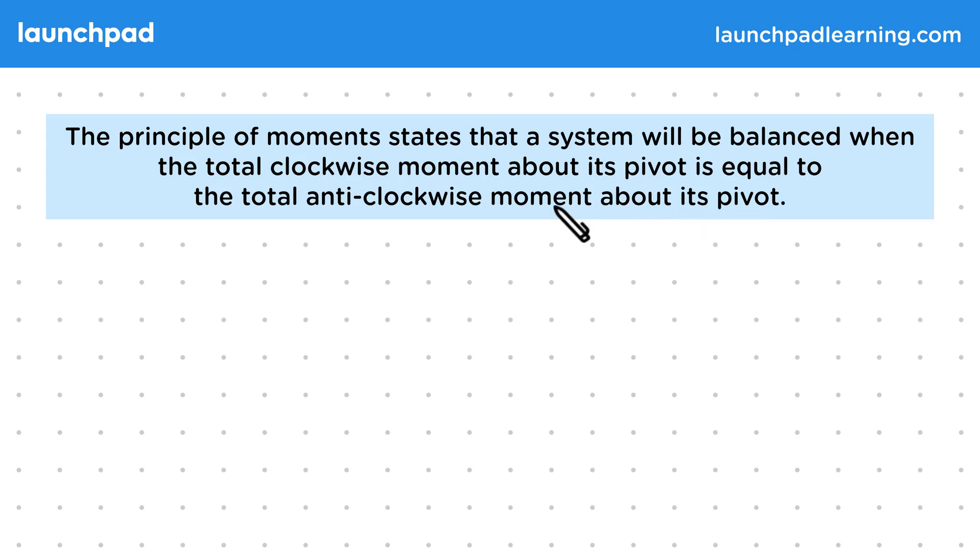Remember that a moment is the turning effect caused by a force, which depends both on the size of a force and how far away it is from a pivot. The principle of moments tells us when these moments will or won't cause an object to turn.